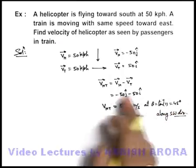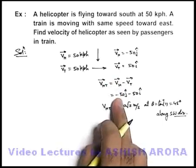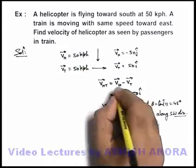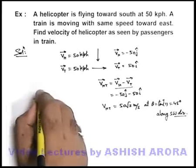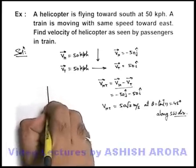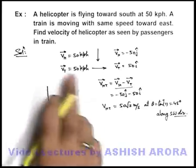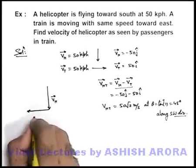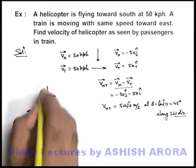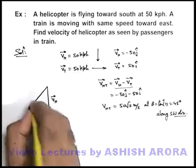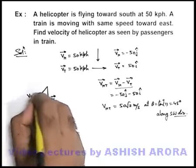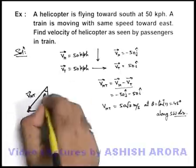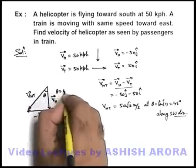This is how we handle the problem using unit vectors. We can also analyze it using a vector triangle. V_H minus V_T can be done like this: the velocity of the helicopter is in this direction, and if we subtract the velocity of the train it will be minus V_T in this direction. The resultant — the velocity of the helicopter with respect to the train — will be in this direction. Since the two vectors are equal in magnitude, theta is forty-five degrees.